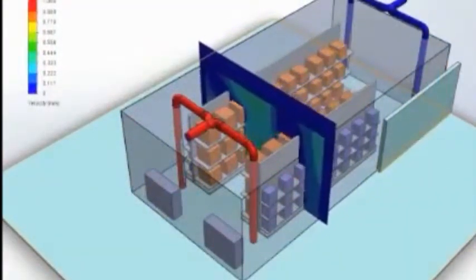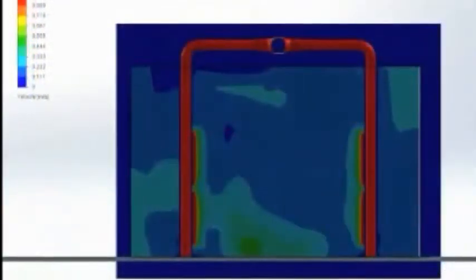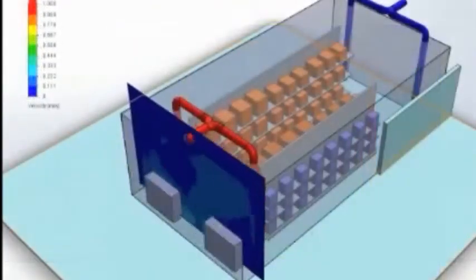This can also be seen by the cut plots which show the velocity of the air down through the central half of the battery charging area.